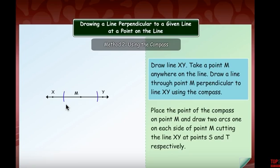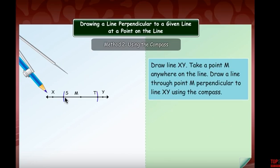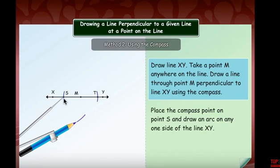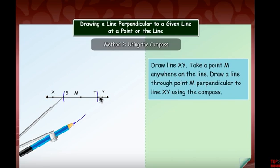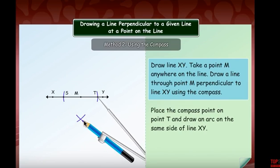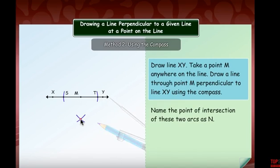Name the two intersecting points on the line as S and T. Now stretch the compass to a span a little greater than half the distance between S and T. Place the compass point at S and draw an arc above the line, then place the compass point at T — without changing the span — and draw another arc. The intersection of these two arcs gives point N.